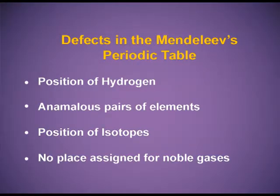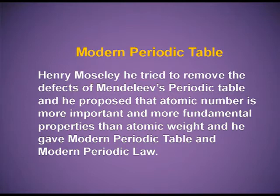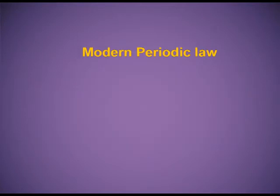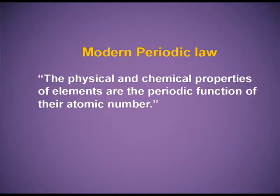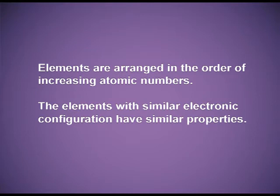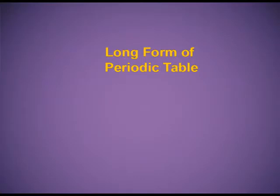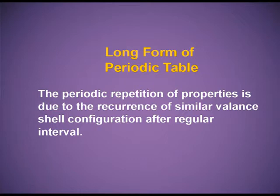There was no place assigned for the noble gases since they were not discovered at the time of Mendeleev. Henry Moseley tried to remove the defects of Mendeleev's periodic table. He proposed that atomic number is more important and more fundamental than atomic weight. He gave the modern periodic table and the modern periodic law, which states that the physical and chemical properties of the elements are the periodic function of their atomic number. He arranged elements in the order of increasing atomic numbers. Elements with similar electronic configuration have similar properties. The modern periodic table is also known as the long form of periodic table.